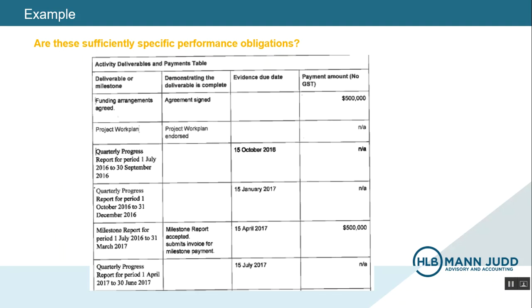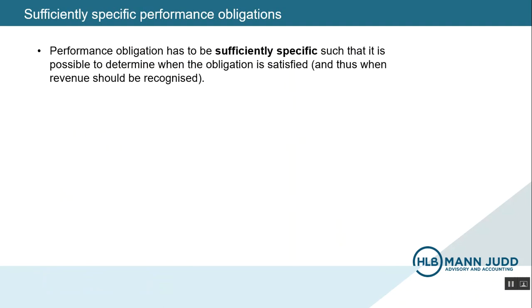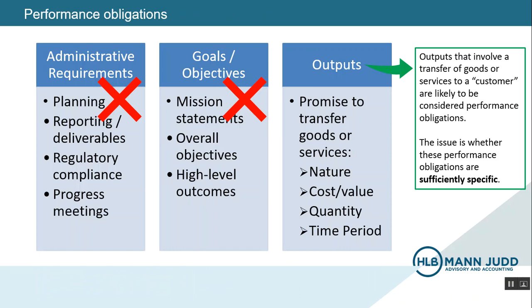Now let's look at another example taken from a grant agreement. Here we have a table containing quantities, timeframes, and other information. Again, there's a lot of detail and it's easy to see how someone might think that these represent performance obligations. However, if we look closer, the actual requirements here are all administrative in nature and don't really transfer goods or services. I would put these in the first group — administrative requirements — being mainly reporting requirements.